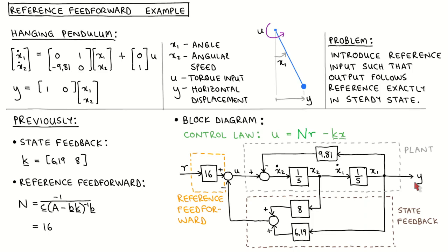Later in this module, we will look at integral control, which has the ability to force steady-state errors to zero. Looking back at what we have seen in this video, we can conclude that the reference feedforward is a viable approach to introducing the reference input if the plant model is accurate and the plant does not experience constant disturbances, or if the steady-state accuracy is not very important for the application. If this is not the case, then one should use a different approach such as integral control.